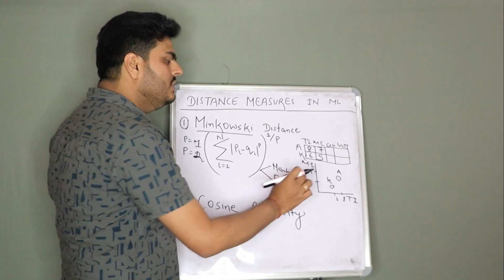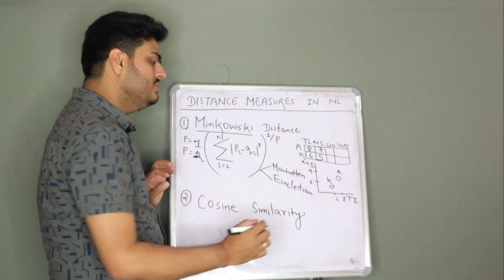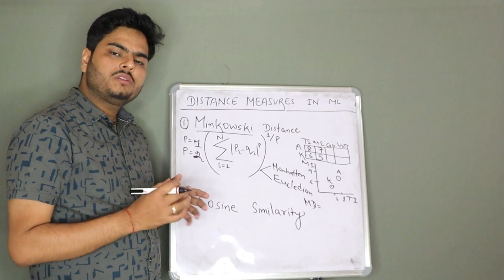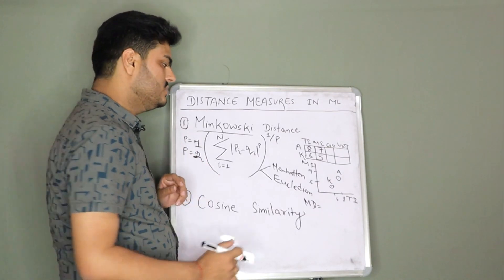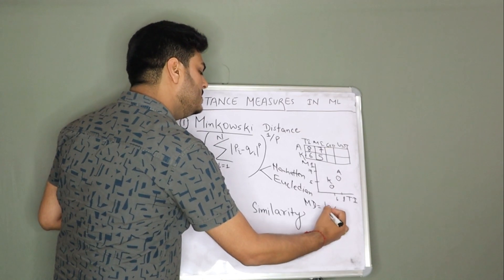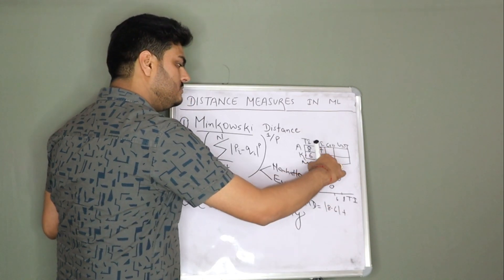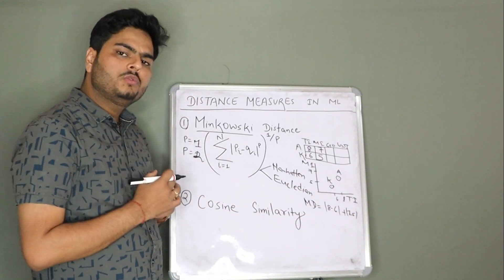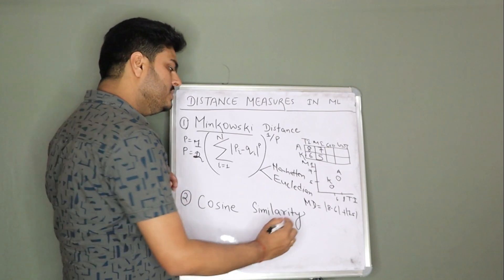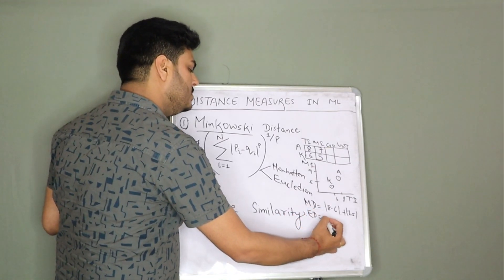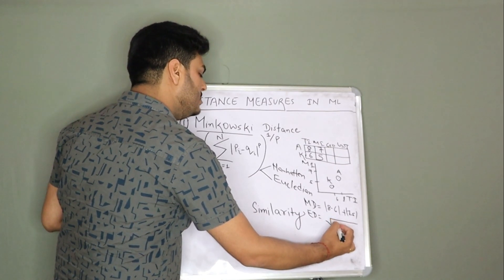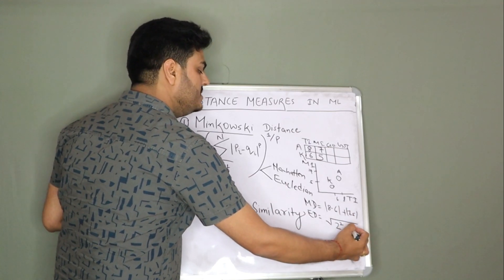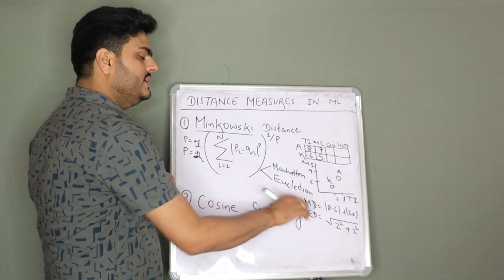If I ask you what is the Manhattan distance between these two points, Manhattan distance is equal to |x1 - x2| + |y1 - y2|. So that is |8 - 6| + |7 - 5|. This is Manhattan distance. If I ask you what is the Euclidean distance, Euclidean distance is equal to the square root of (8-6)² plus (7-5)², which is the square root of 4 plus 4. This is your Euclidean distance.